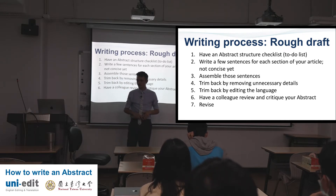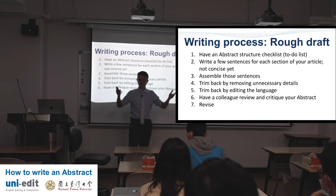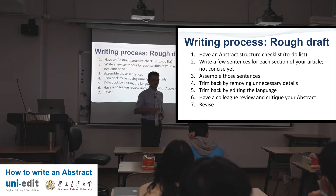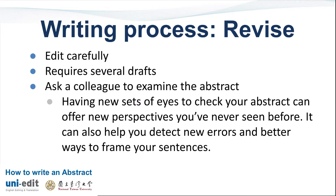Have a colleague review and critique your abstract — this is a huge part of academia. You're on a team together, on a graduating team. You will read each other's abstracts and help, and people will read yours and help. Then revise, edit, do it again. Edit carefully — it requires several drafts. Having new sets of eyes to check your abstract can offer new perspectives you've never seen before and can also help you detect errors and better ways to frame your sentences. One friend might say: 'I think this sentence goes better up here.' It takes another person to know that sometimes.